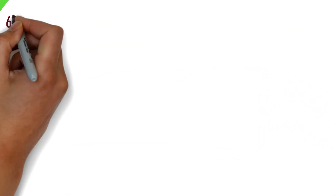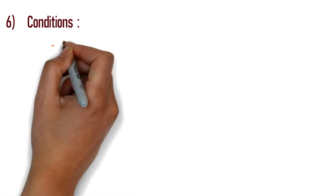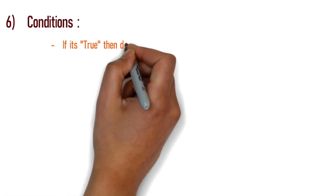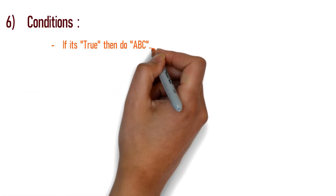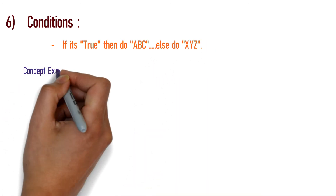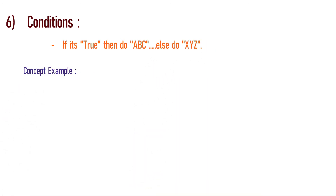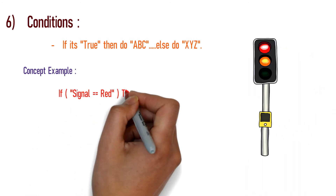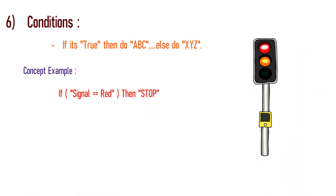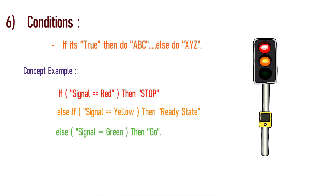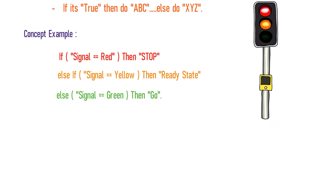Next is Conditions. Conditions determine what action to take based on a situation. A real-time example: when we go on the road, we stop at a red signal and move at a green signal. This decision-making process is what we call conditions.